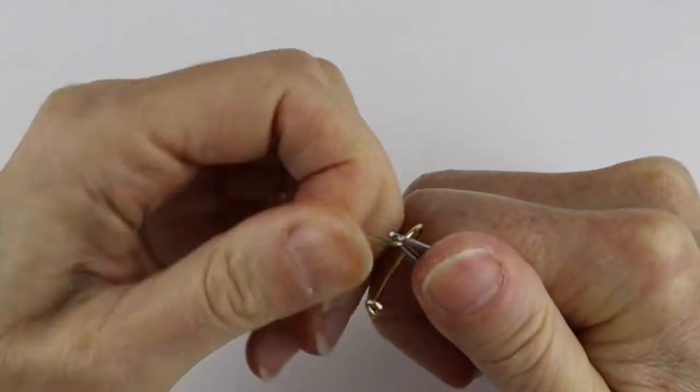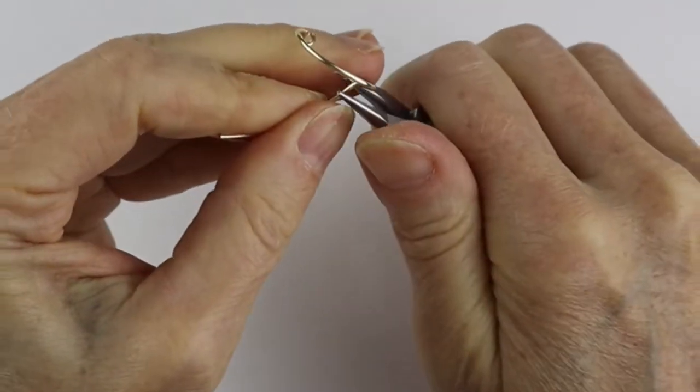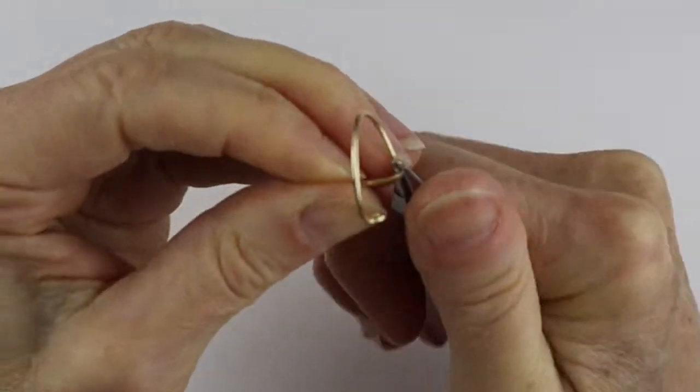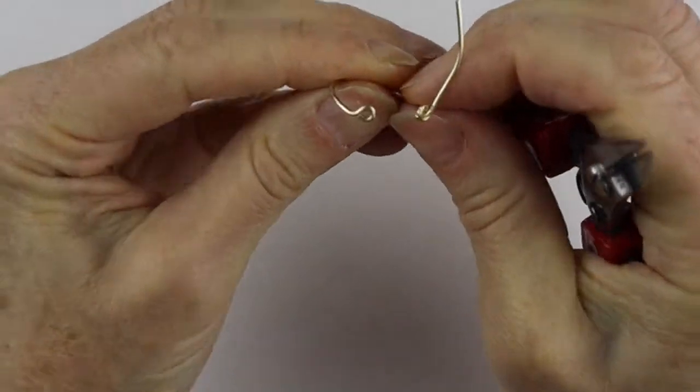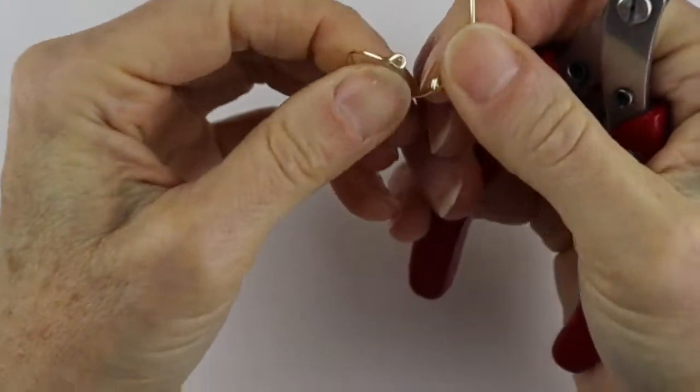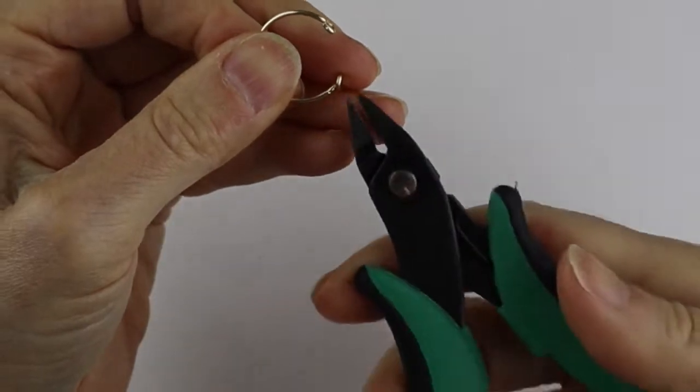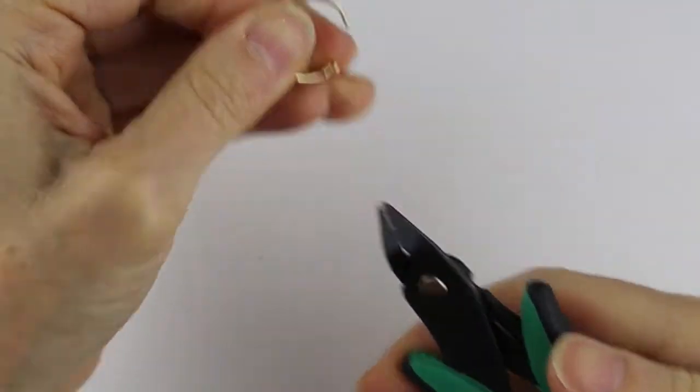We're just going to bend this one up and bring it around. So basically you just want to center a couple of little loops on either side. You'll see how it goes there, and then we'll clip the end here with our flush cutters.